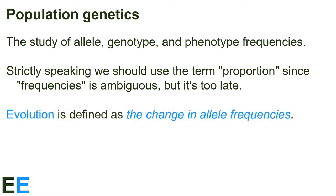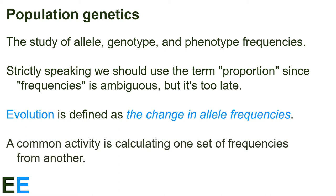When doing population genetics, evolution is defined as the change in allele frequencies. There are other definitions in other parts of evolutionary biology, but when doing population genetics, this is the one we use. A common activity is calculating one set of frequencies from another — if we have data for just one set, can we calculate the other frequencies, and how would we do this?